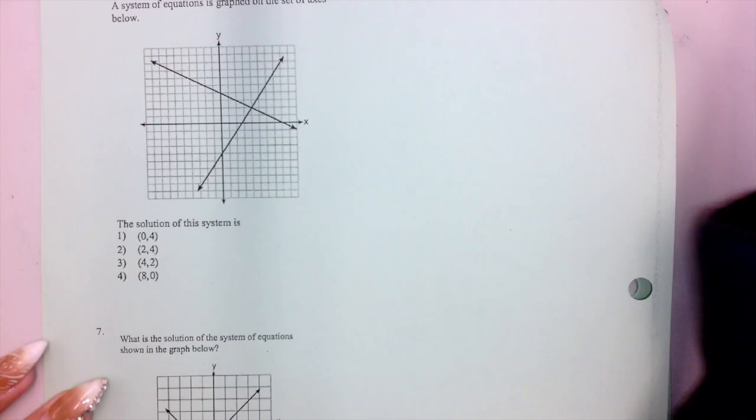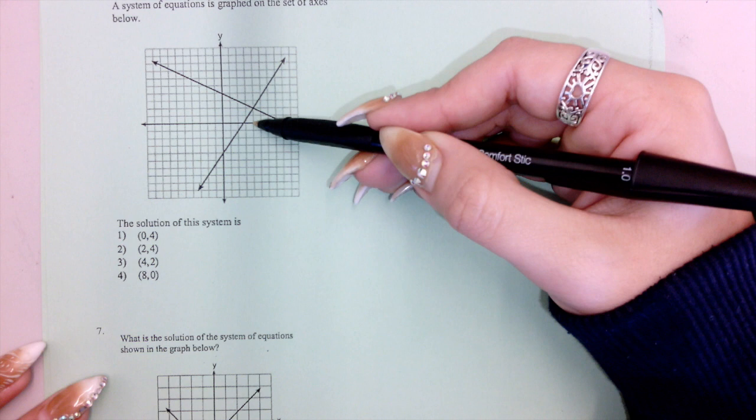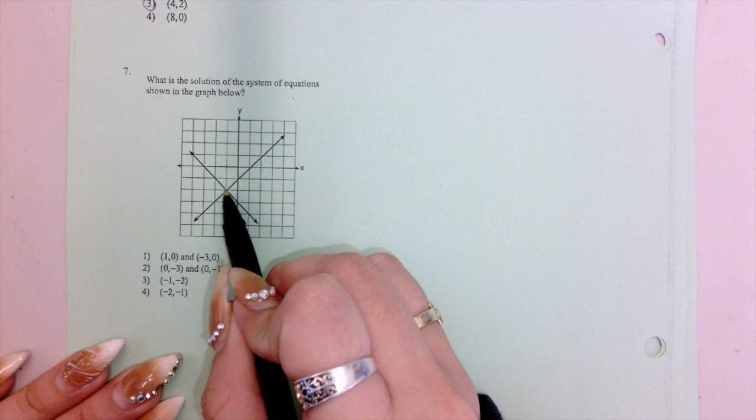This one should be pretty simple — the solution is always the intersection point of the two lines. For the first graph, I count over to 4 and up 2, so the intersection point is (4, 2) and that's the solution. For the second graph, the intersection point is at negative 1 comma negative 2, so the solution is (−1, −2), which is answer choice 3.